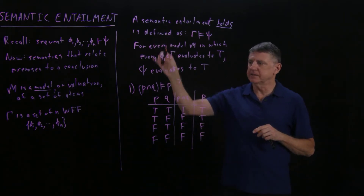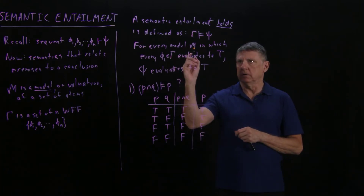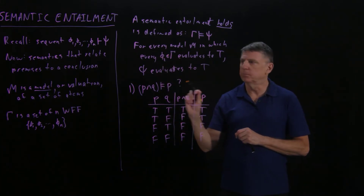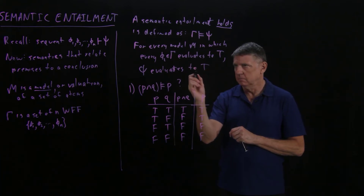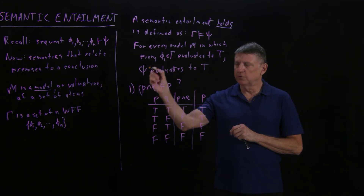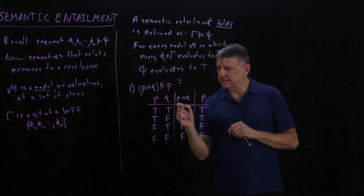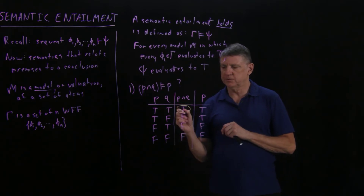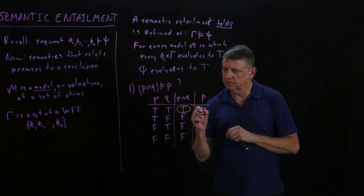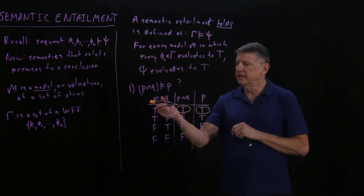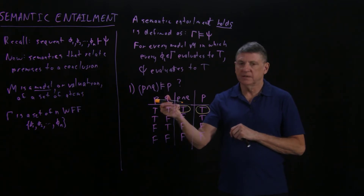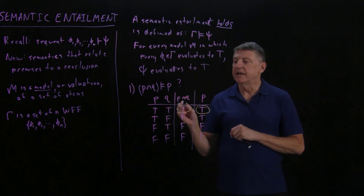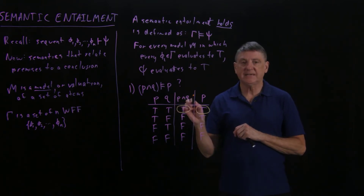We now have to understand this carefully. This says: for every model — that is, for every row of the truth table — in which every premise (we only have one premise) evaluates to T, the proposed conclusion also evaluates to T. In this case there's only one row where the premise is true. We circle where the premise is true and where the supposed conclusion is true, and here we see this is the only model in which the premise evaluates to T, and in that row the supposed conclusion also evaluates to T. So we would say that P and Q semantically entail P.